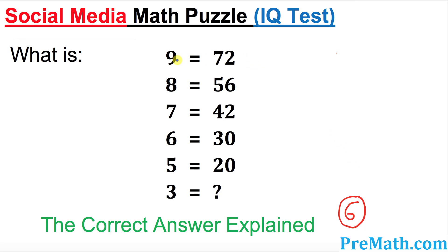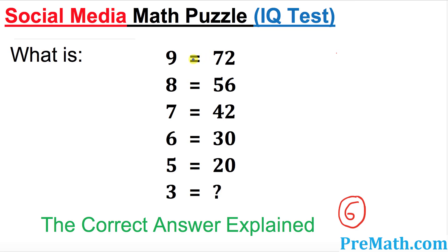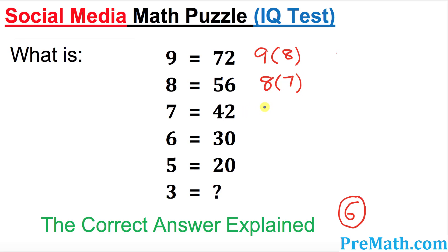So now you can see in the very first equation on the top over here, it says 9 equals 72, and you know that 72 could be written as 9 times 8. Look at the next equation — 56 could be written as 8 times 7. Likewise, if you look at the pattern, that's going to be 7 times 6.